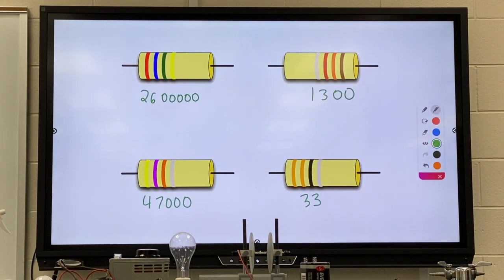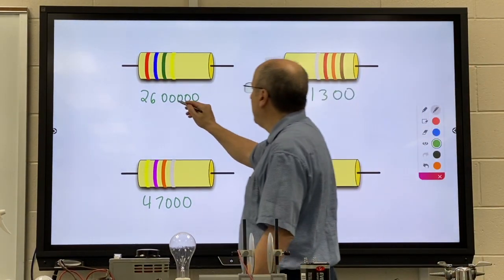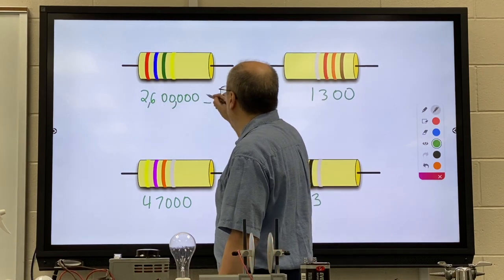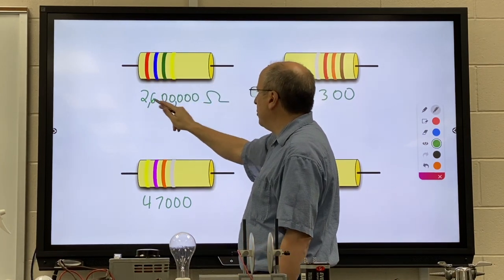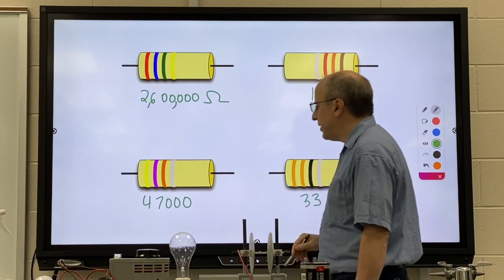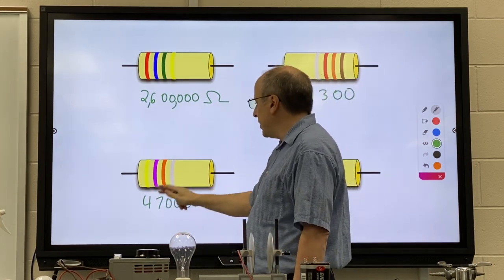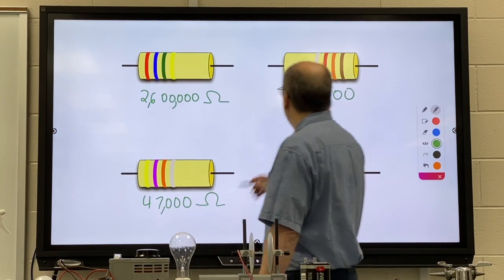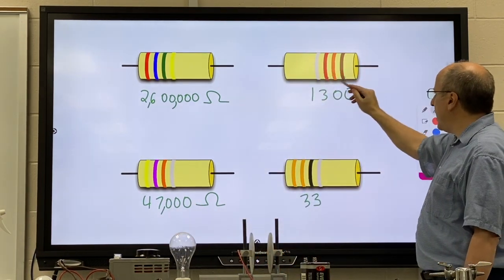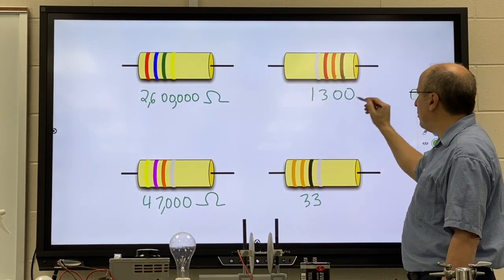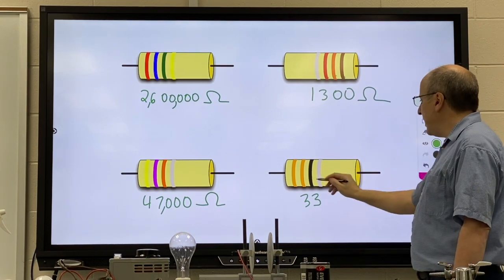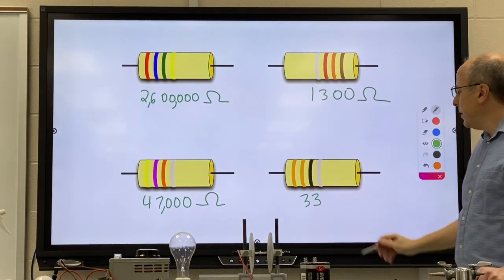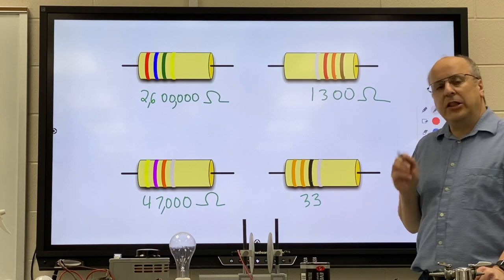You should have gotten for the first one 2.6 million. Red, blue, two, six. Green, five zeros. For this one four, seven, and three zeros. For this one you start with the brown so it's one, three, and two zeros.